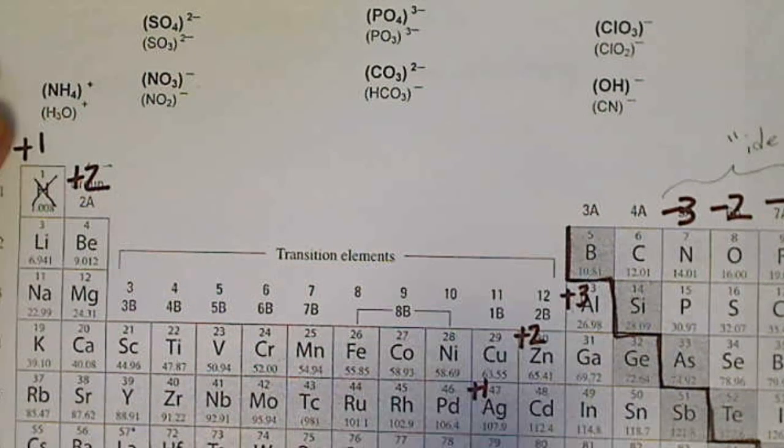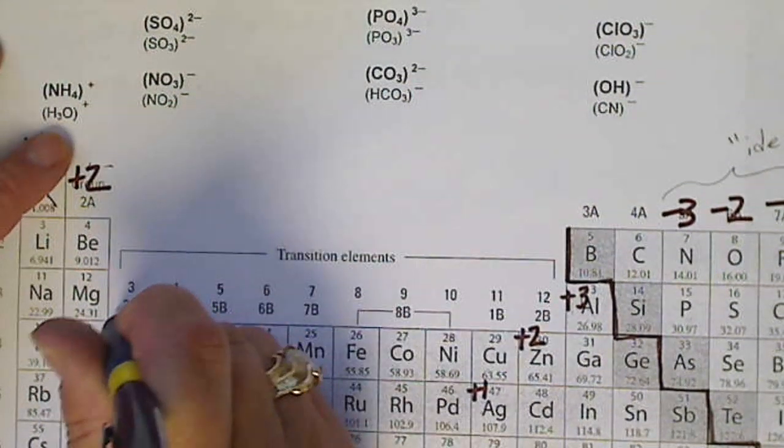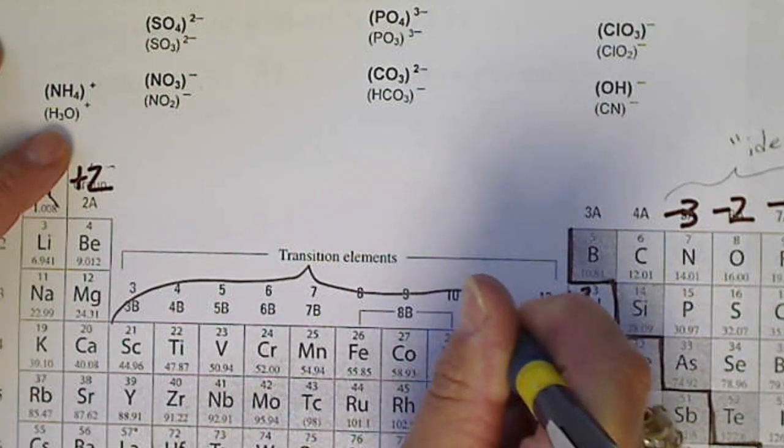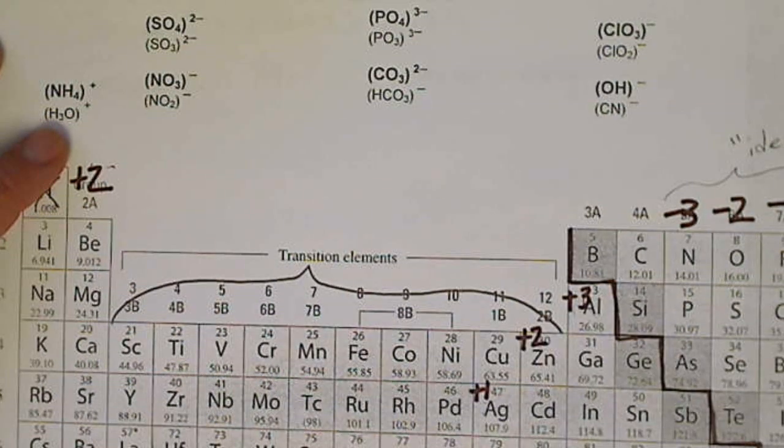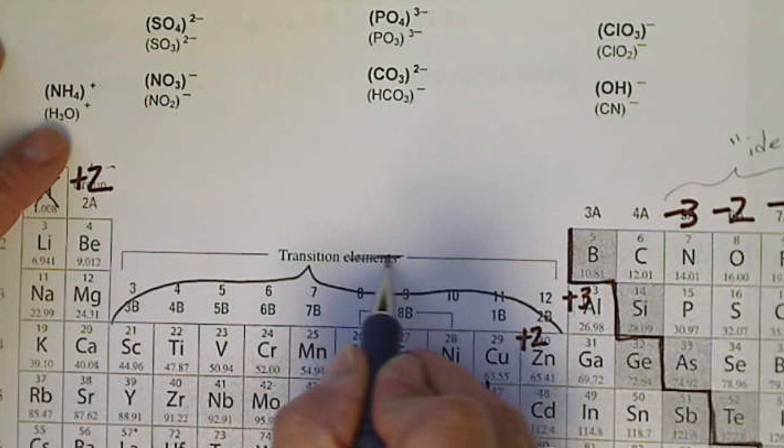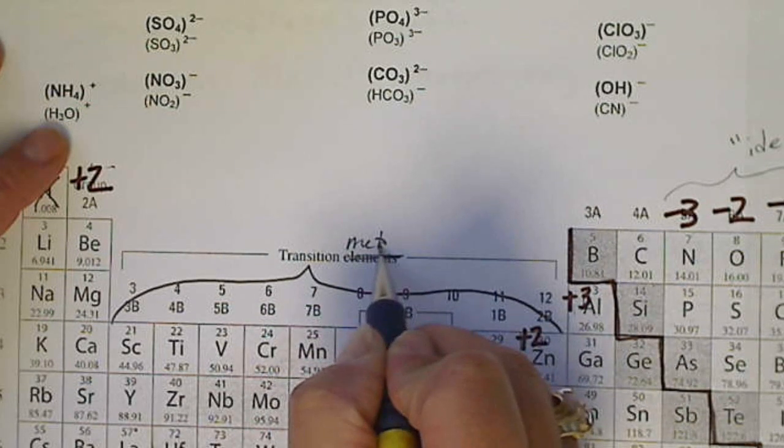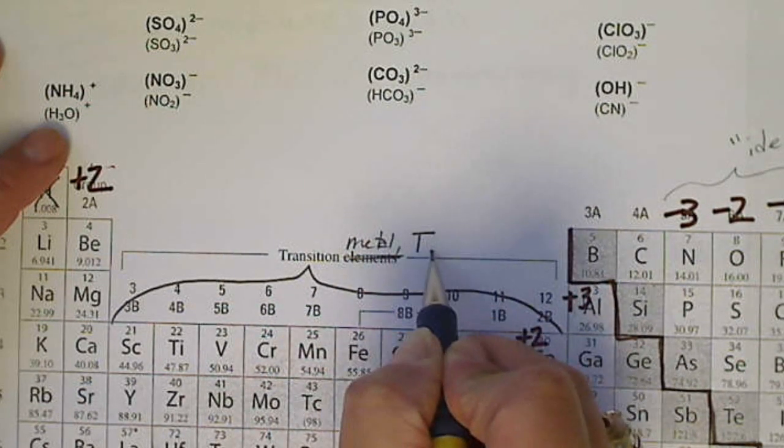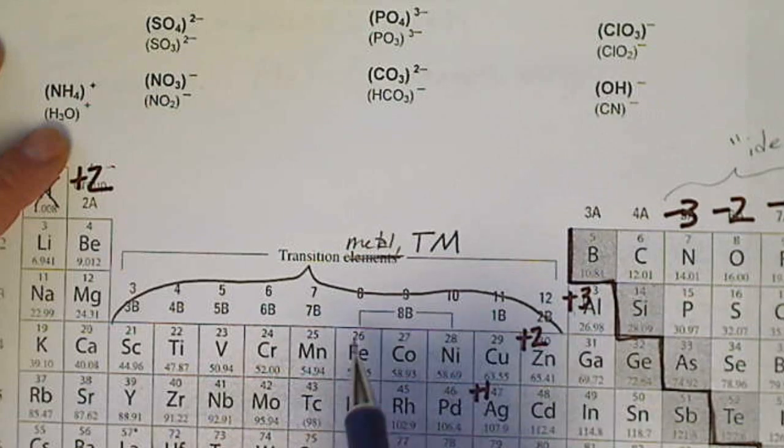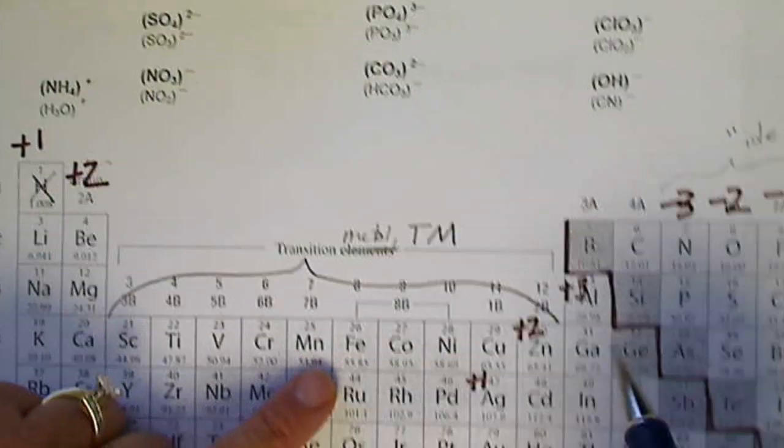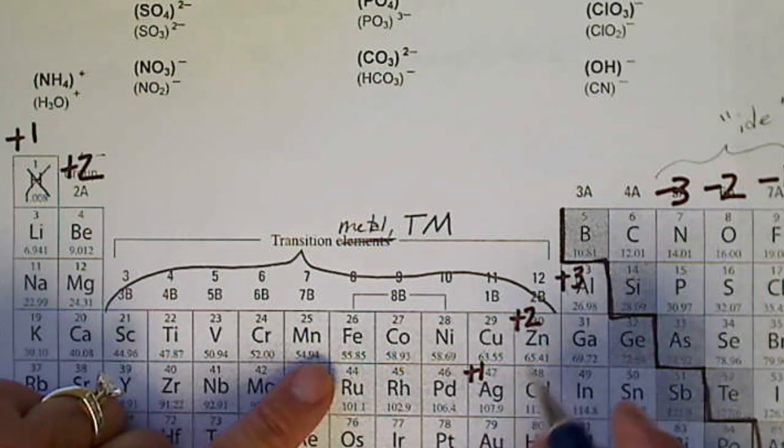So those metals are right here where it says transition elements. These are in the middle of the periodic table. So since these are metals, we could also call them transition metals, and I'm going to call those TM. The charges can vary except for zinc and silver.